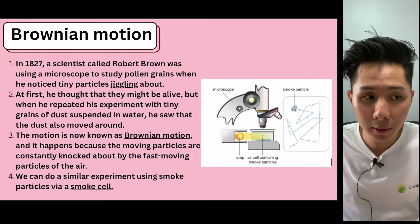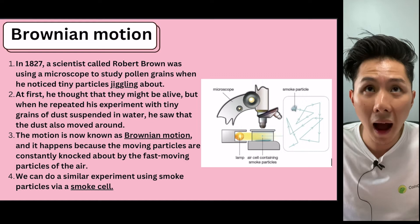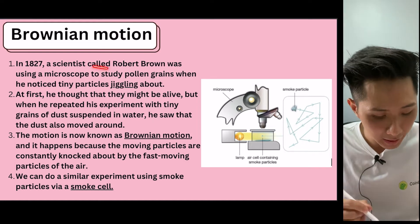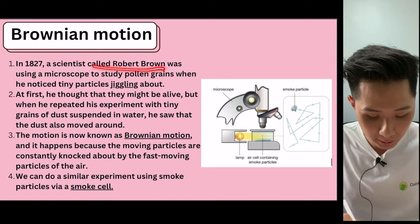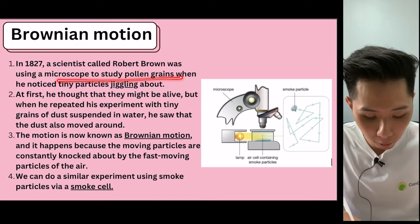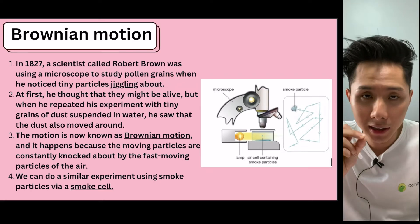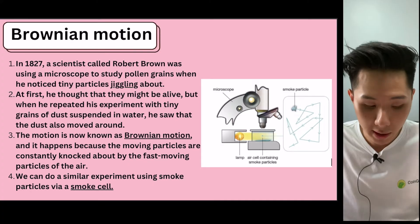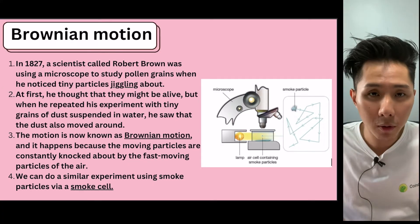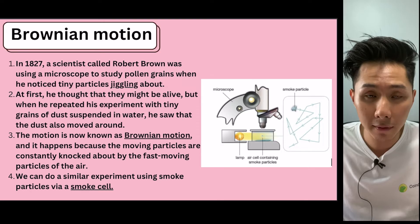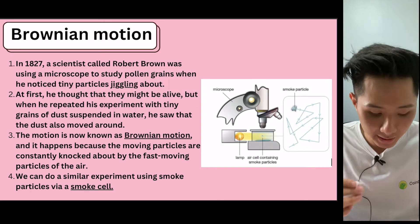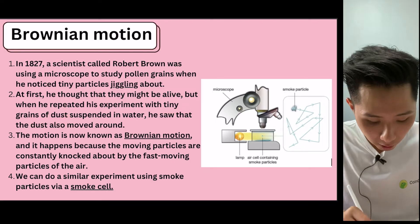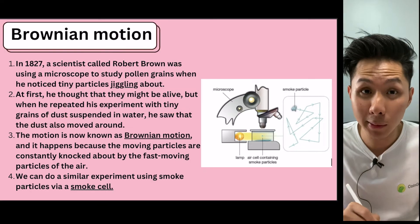And let's look into a term called Brownian motion that describes how the air particles move. So in 1827, there's a scientist called Robert Brown. He was using a microscope to study pollen grains, and he noticed that tiny particles of the grain were jiggling about, moving a little bit. And he thought that with the pollen grains, they're still alive, therefore they are moving.